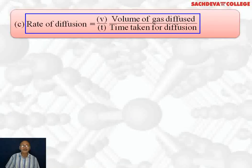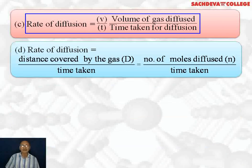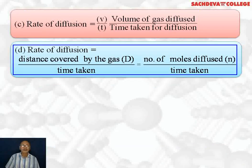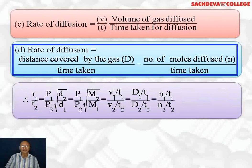Rate of diffusion is equal to the ratio of volume of gas diffused per unit time, that is volume divided by time taken for diffusion. Rate of diffusion can also be defined as distance covered by the gas per unit time, that is distance traveled by the gas divided by time taken. It is also equal to number of moles of gas diffused divided by time taken.